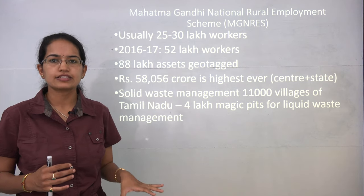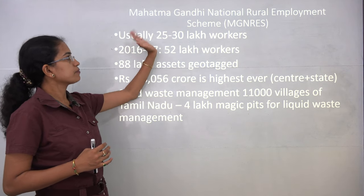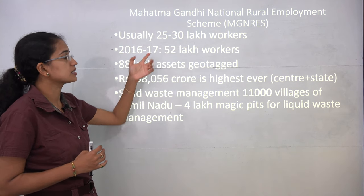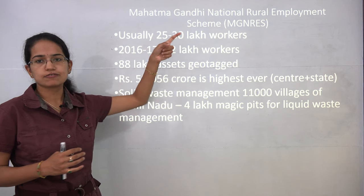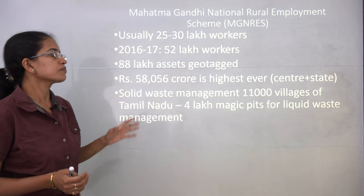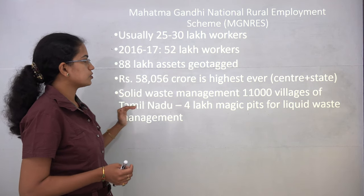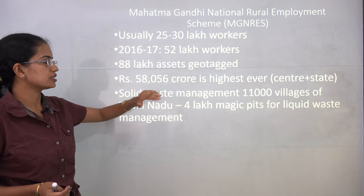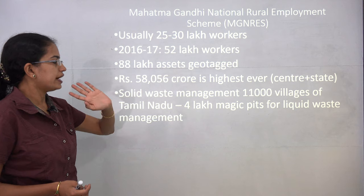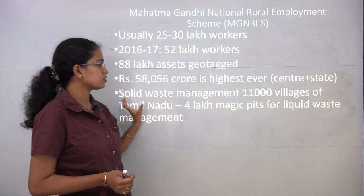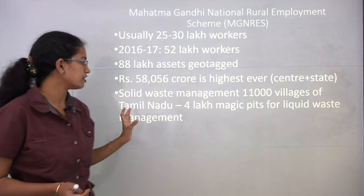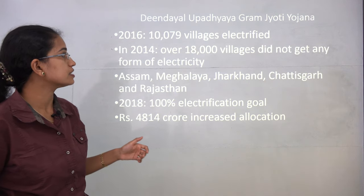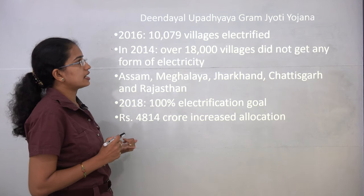Women farmers are supported under the Mahila Kisan Sashaktikaran Pariyojana, and one third of gram panchayats have already been reached. The rural employment guarantee scheme provides a minimum of 100 days of guaranteed employment; nearly 52 lakh workers are currently involved, up from 25–30 lakh previously. Nearly 88 lakh assets have been geotagged, and this year has seen the highest contribution for this scheme by both centre and state.